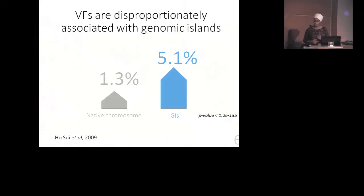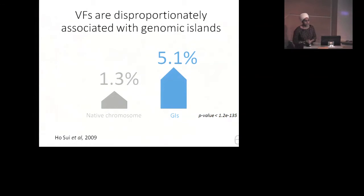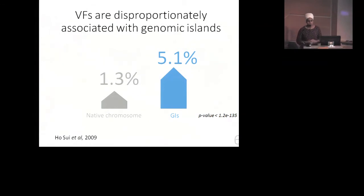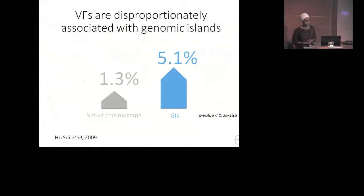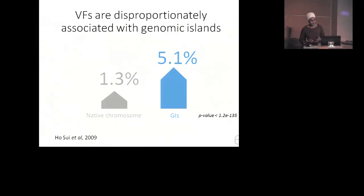We also tried to break this dataset down in different ways — looking at what if we only used one genomic island prediction method, or what if we considered subsets of the virulence factors, like only the common virulence factors or pathogen-associated virulence factors. We always saw this significant difference — there were always a higher proportion of virulence factors in genomic islands.